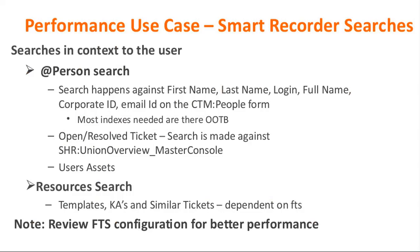When you type a person's name, Smart Recorder searches against CTM people form for first name, last name, login, full name, corporate ID, and email ID. For most cases, there are indexes in place for these fields. However, if you're experiencing slowness, review these fields and the indexes on the CTM form to see if anything is missing.